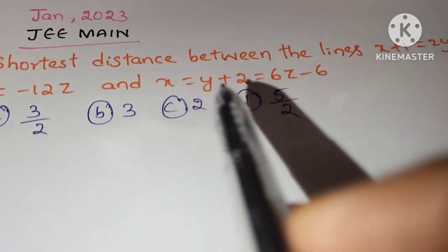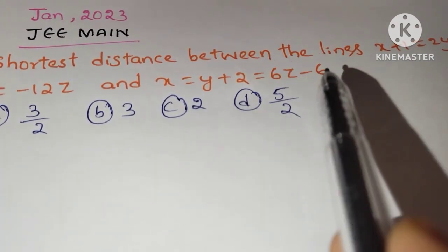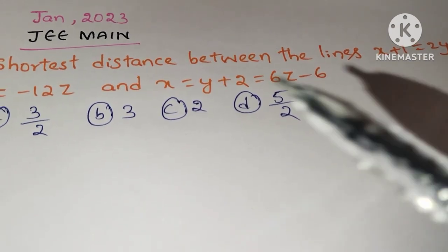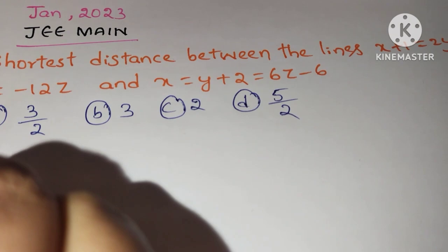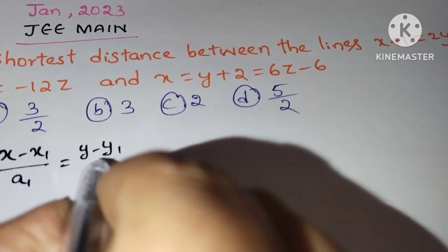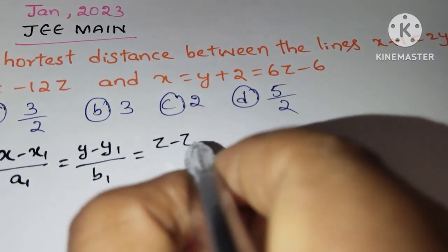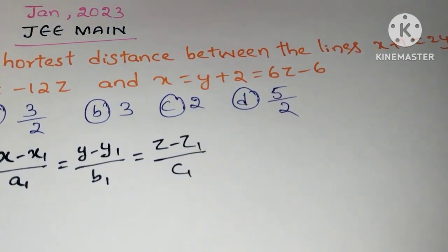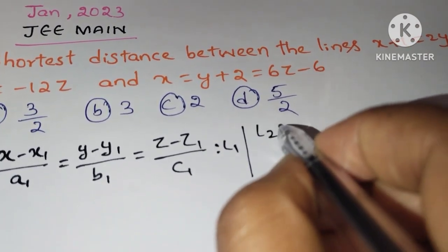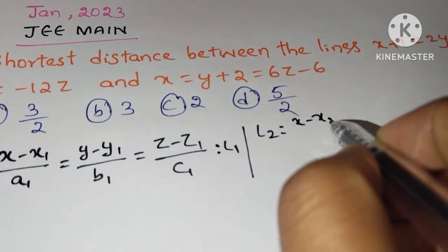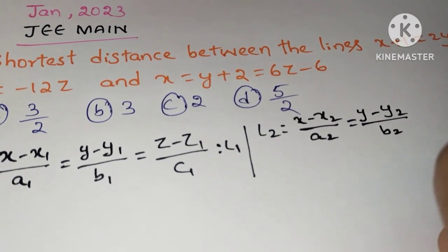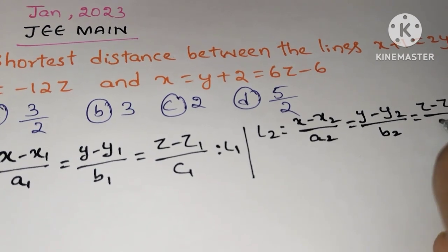Let us solve this. First we need to find the shortest distance between the lines. We know it is in the form of Cartesian, but we rearrange this. What is the Cartesian form equation? X minus x1 by a1 equals y minus y1 by b1 equals z minus z1 by c1. This is for line 1. For line 2, x minus x2 by a2 equals y minus y2 by b2 equals z minus z2 by c2.